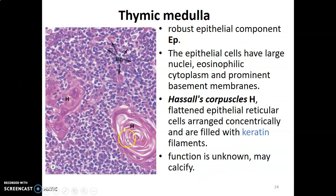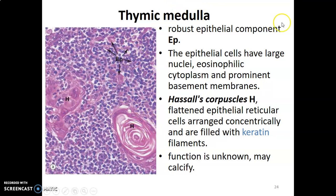In the medulla we have what are called Hassall's corpuscles. These are epithelial reticular cells that become flattened, arranged concentrically, and filled with keratin filaments. Their function is unknown, but they may calcify with age — so on a histology slide of an older thymus you may see calcified Hassall's corpuscles in the medulla. When describing the medulla, note that it is less cellular than the cortex and contains Hassall's corpuscles. These epithelial cells have large nuclei and eosinophilic cytoplasm with a prominent basement membrane.